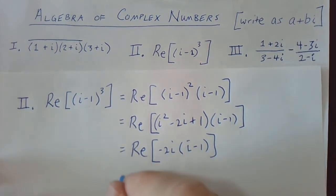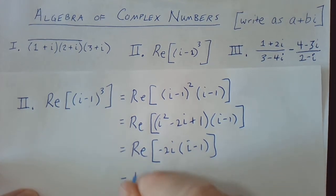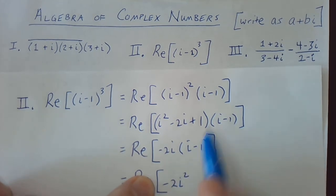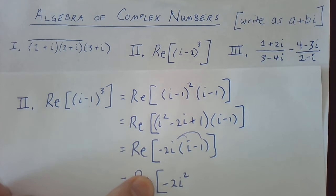So I'm going to distribute that and I will get negative 2i squared, and then plus 2i.